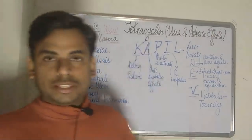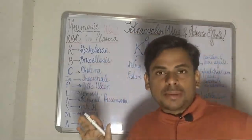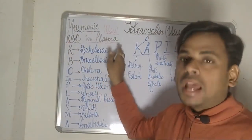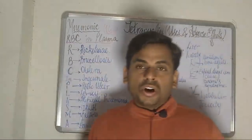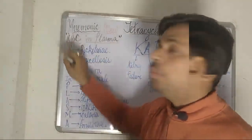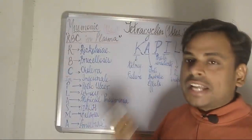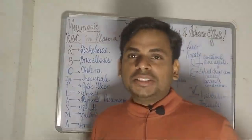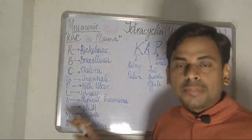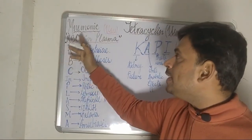Beginning with the tetracyclines, the uses can be better remembered if we just remember the mnemonic: RBC in plasma. Every alphabet of 'RBC in plasma' is going to correspond to one of the uses of tetracyclines. The uses can be better remembered and written down in sequence if we just remember the initials — RBC in plasma.